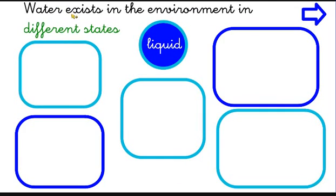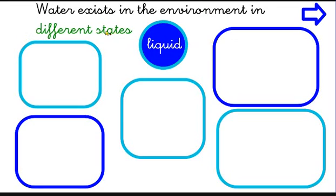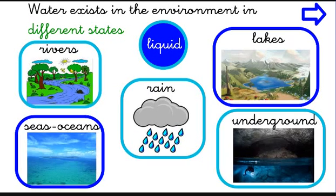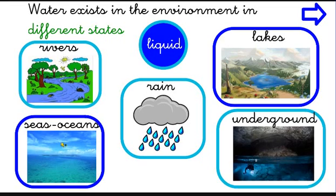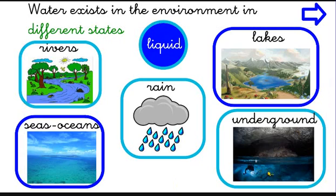Water also exists in the environment in different states. One of these states is the liquid state. For example, the river, the seas, the oceans, the rain, the lakes, and underground water — like inside caves — it is liquid. You cannot take liquid water in your hand because it goes between your fingers.